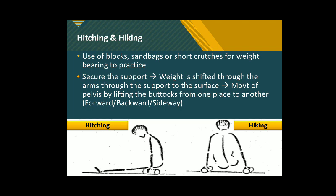Once the patient is able to lift weight over this support and the support is secured, weight is shifted through the arms through the support to the surface, and there is lifting of the pelvis so the buttocks come off the ground or surface. The buttocks can then be moved from one place to another — in a forward, backward, or sideways direction. In the image, hitching is shown as lifting the body and hiking as shifting the body.